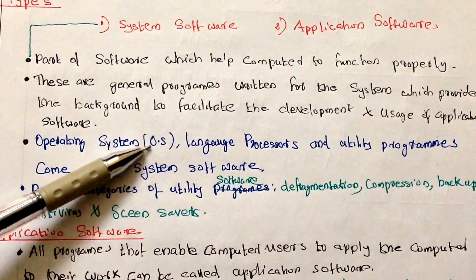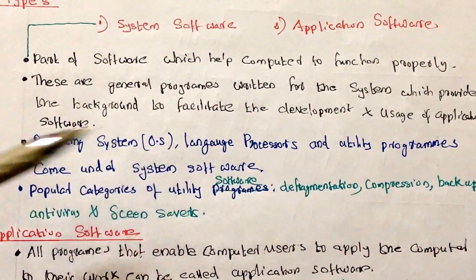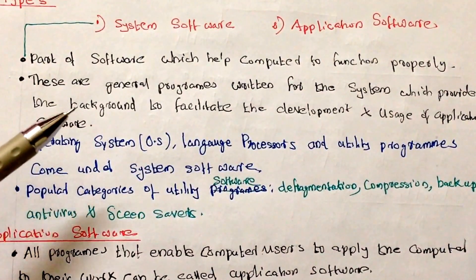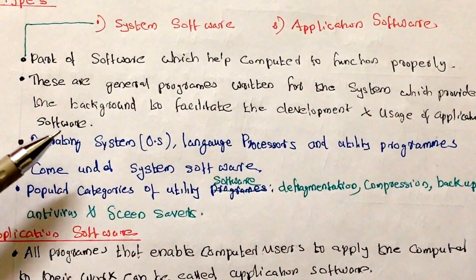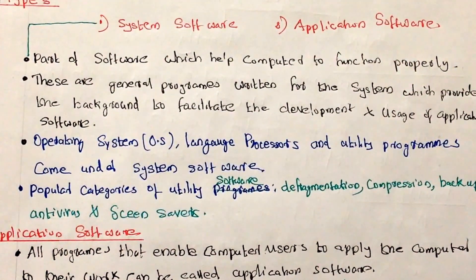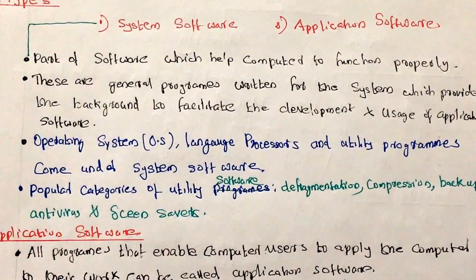Operating system OS, language processors and utility programs come under system software. The main thing like operating system, what is the operating system? Some of the Windows operating system, Apple have iOS operating system. So different operating systems are there. Android and language processors and utility programs which comes under system software.